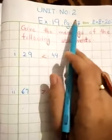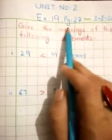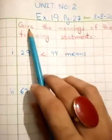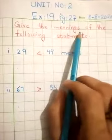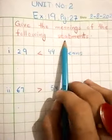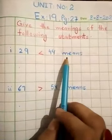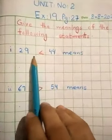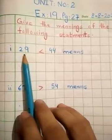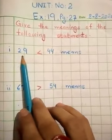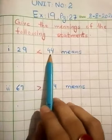Let's come to the exercise. Unit No. 2, Exercise No. 19, Page No. 27. Question is, give the meanings of the following statements. First of all, you have to read this statement. I am telling you how to read. 29 is less than 44. Then you have to write in same.